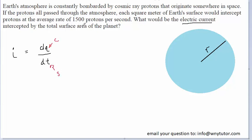The question states that about 1,500 protons are flowing for each square meter of Earth's surface per second. And so we can begin to write the current as 1,500 protons divided by 1 second.